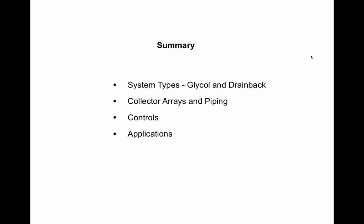So what have we talked about? We discussed how to design a system with the best characteristics, settled on drain back, covered collector arrays and how to pipe them, talked about controls and what and where they're sensing, and discussed different applications for solar hot water. This wraps up this portion of our webinar today. We'll now turn it back over to Charlie and see if there are questions we can answer.